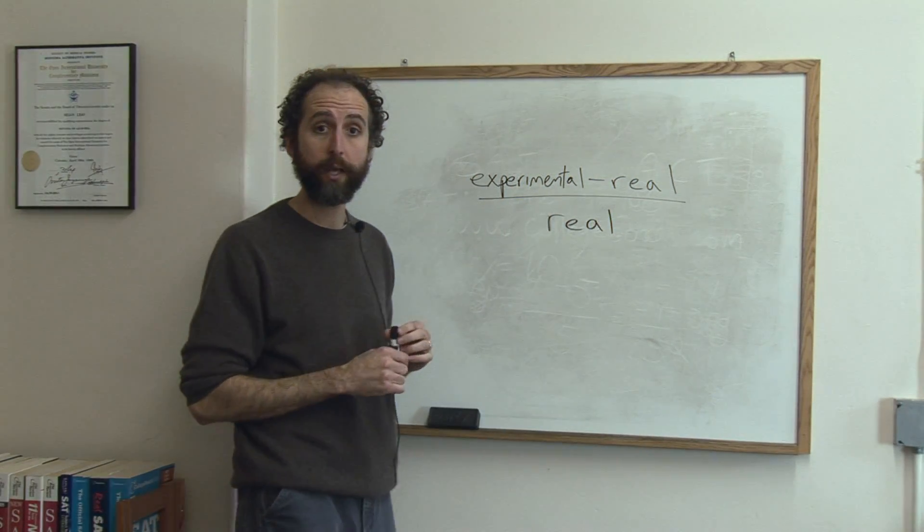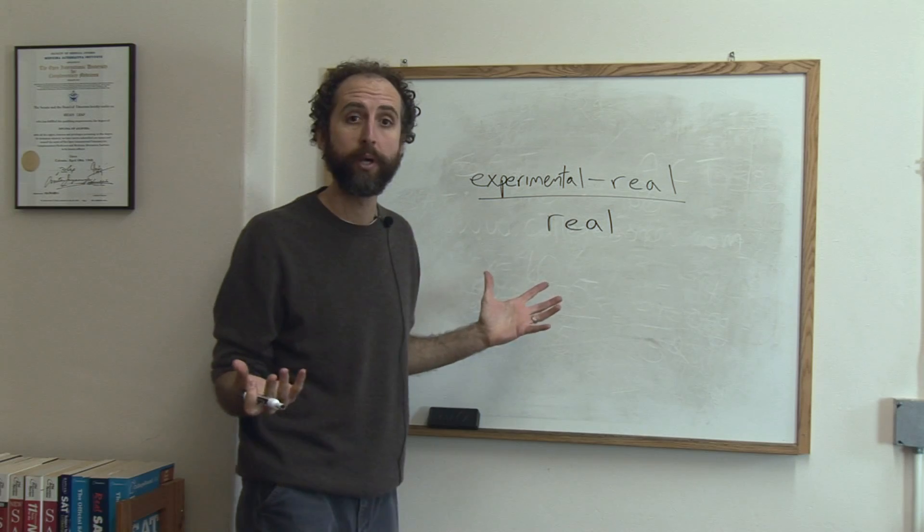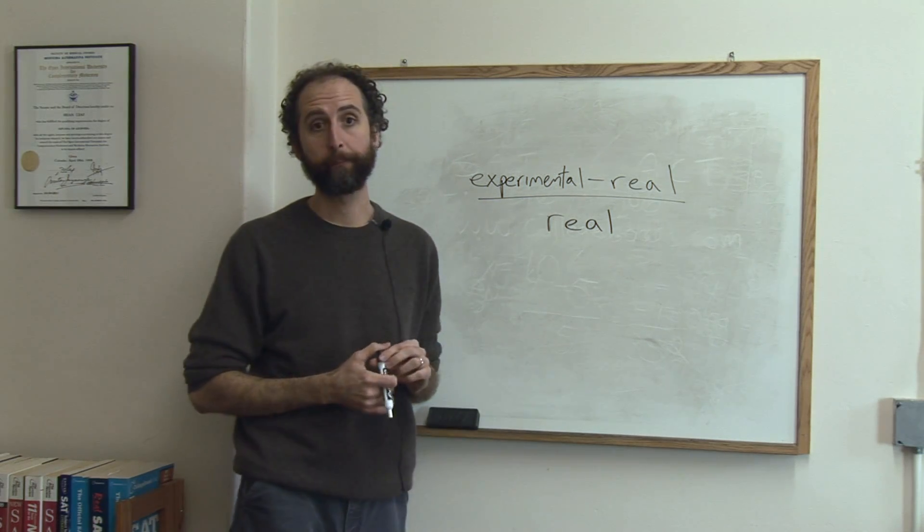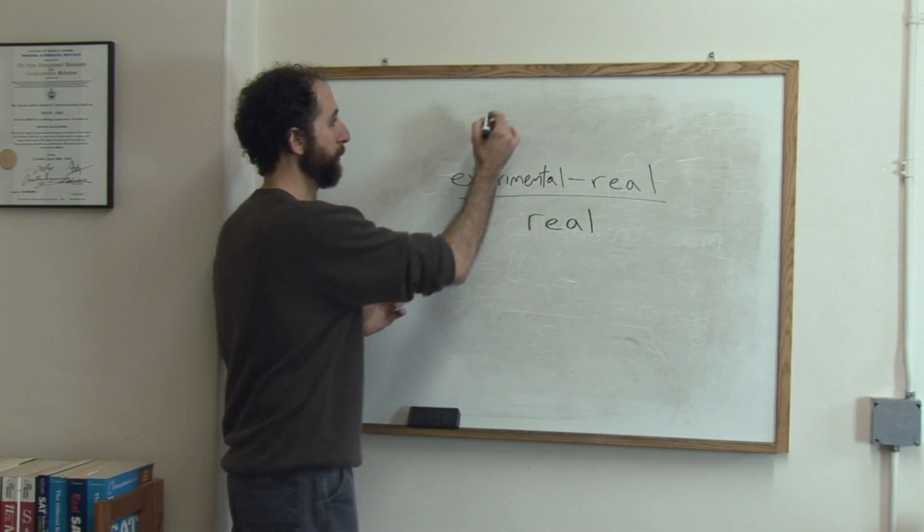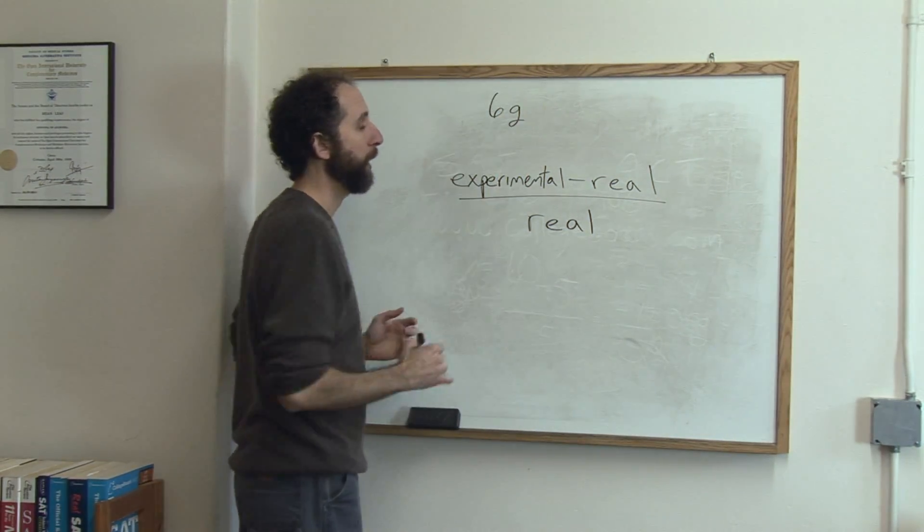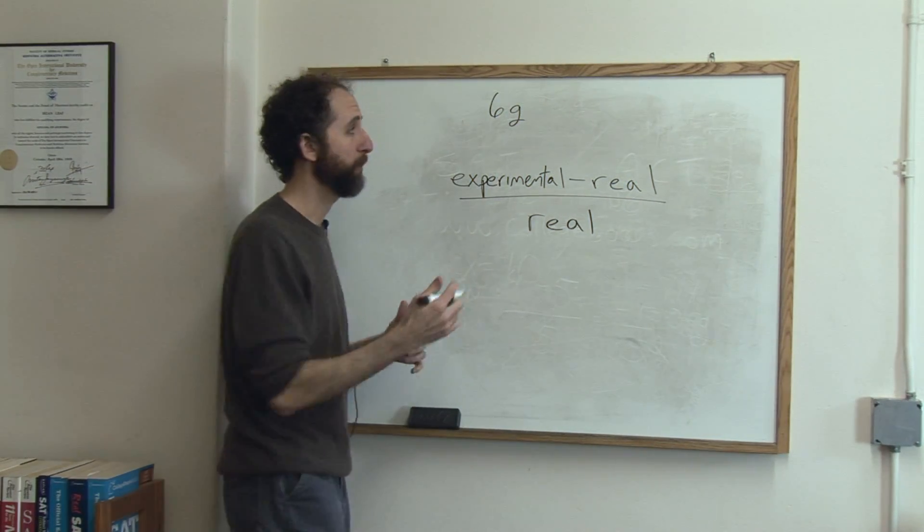So let's say you're in science class and you've done a lab and you're supposed to calculate the weight of something. In your lab, you got that it was six grams, and maybe you know that it's supposed to have been five grams.